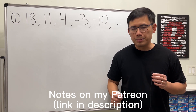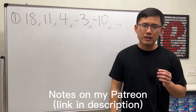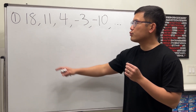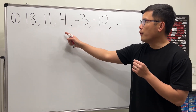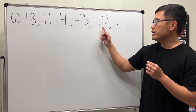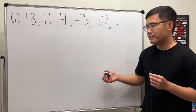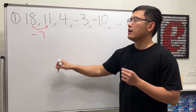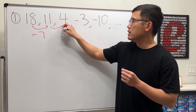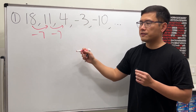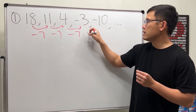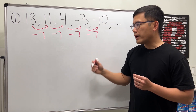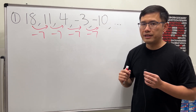Let's see how we can find an explicit formula for a given sequence. We'll do a total of eight sequences. For the first one: 18, 11, 4, -3, -10, and so on. From 18 to 11 it's minus 7, and 11 minus 7 gives us 4. This pattern continues, so we know we have an arithmetic sequence.